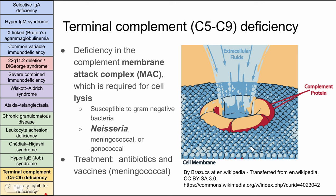The last two are complement deficiencies. Starting with terminal complement deficiency — this is a problem with C5 through C9, which make up the membrane attack complex. A defect here means the cell is unable to lyse other cells, leaving you susceptible to gram-negative bacteria. Neisseria is the classic association. Treatment is antibiotics, and you want to make sure these patients are vaccinated with the meningococcal vaccine.